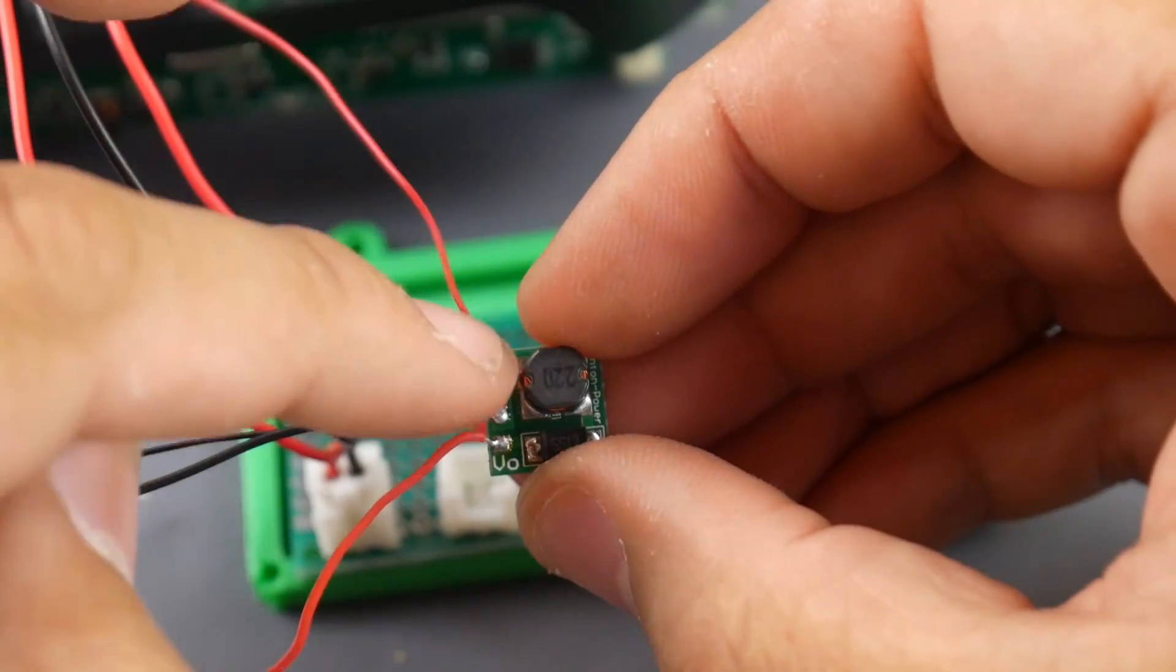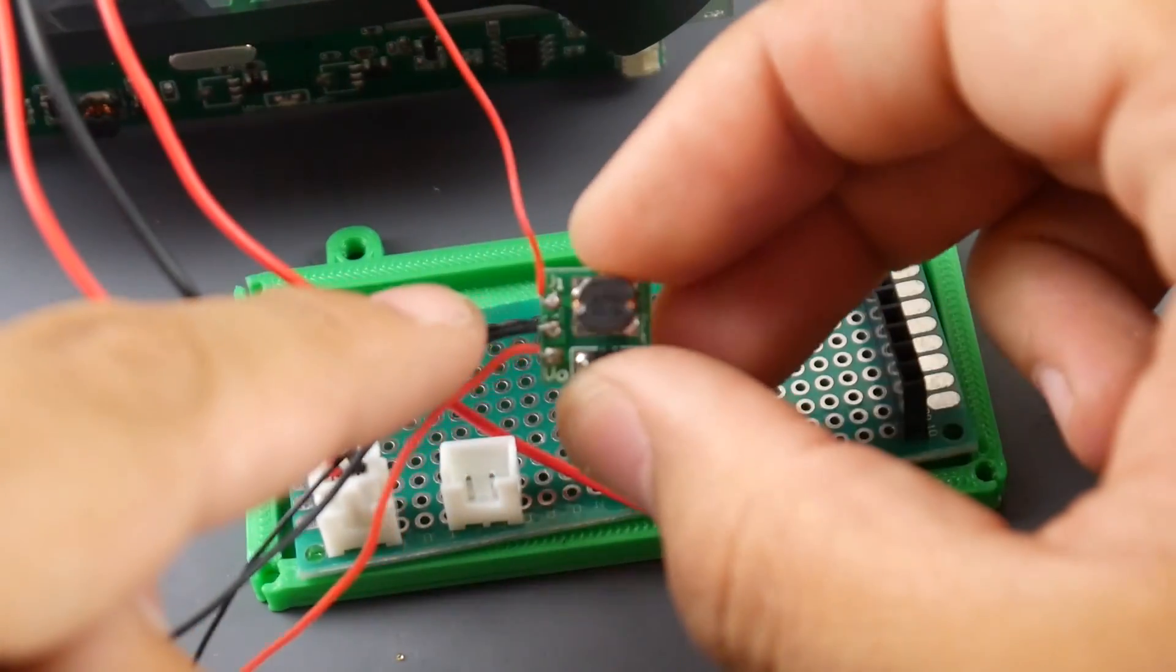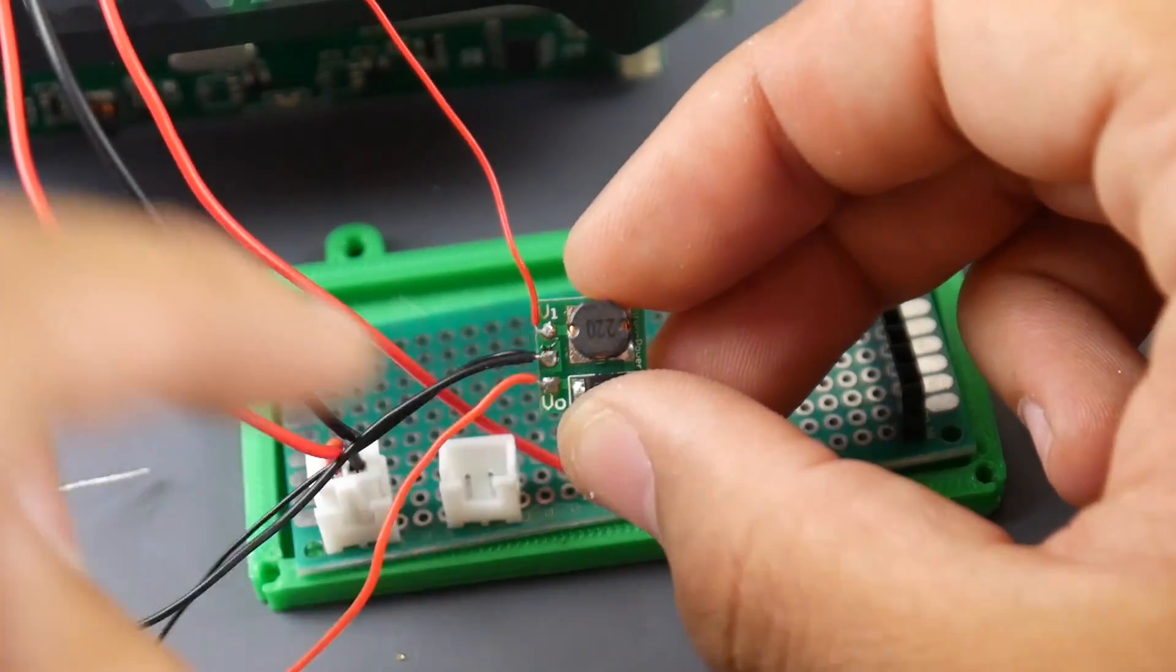Next, I'm going to go ahead and grab the step-up converter. Now, make sure you get the same exact one in the link, because there's ones for different voltages. So this one has three pins. It has VO, ground, and VI.